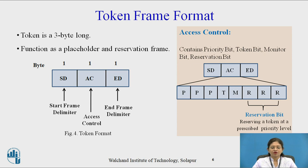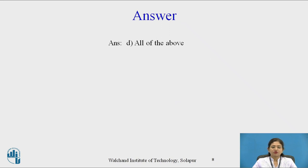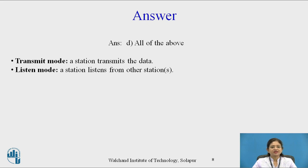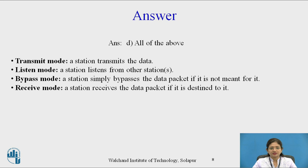This is the token frame format of the ring topology. Now pause the video and think about this question: Token ring station operates in which of the following modes? A. Transmit mode, B. Listen mode, C. Bypass and receive mode, D. All of the above. The answer is D — all of the above. In transmit mode a station transmits data; in listen mode a station listens from other stations; in bypass mode a station bypasses the data packet if it is not meant for it; and in receive mode a station receives the data packet if it is destined for it.